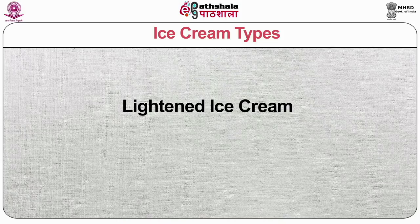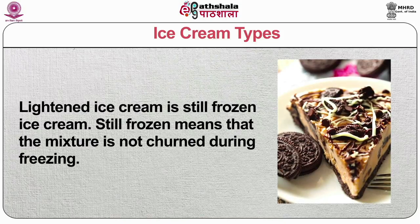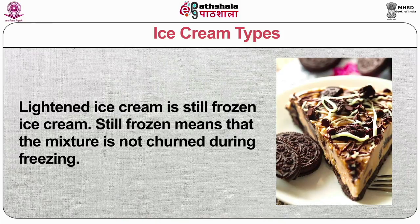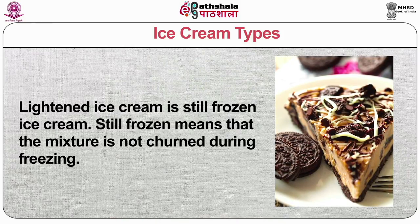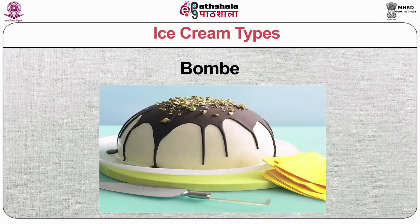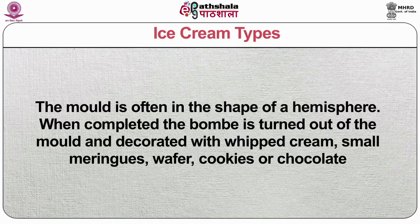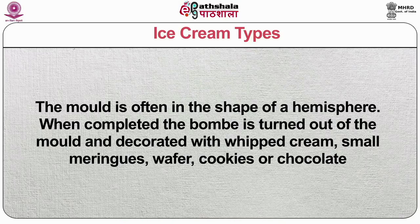Lightened ice cream is still frozen ice cream. Still frozen means that the mixture is not churned during freezing. A bomb, or ice bomb, is potentially the most dramatic of frozen desserts. Different flavors of lightened ice cream are layered into the bomb. The mold is often in the shape of a hemisphere. When completed, the bomb is turned out of the mold and decorated with whipped cream, small meringues, wafer cookies or chocolate.